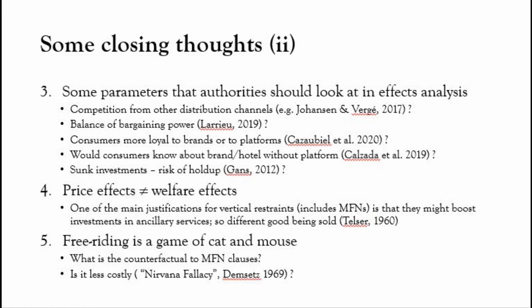Our analysis reveals parameters that authorities could examine in an effects analysis: what type of competition exists from other business channels; what is the balance of bargaining power between platforms and retailers; are consumers more loyal to brands or platforms; would consumers know about the brand or hotel without the platform; and are there sunk investments and a risk of hold-up involved? Another key observation is that price effects are not the same as welfare effects. A main justification for vertical restraints, including MFNs, is that they may boost investments in ancillary services — meaning a different quality good is sold, and you can't simply compare prices without looking at quality. Finally, free riding is a game of cat and mouse: what is the counterfactual to MFN clauses, and is it going to be less costly to society? Something akin to Demsetz's Nirvana fallacy is at play in this space.